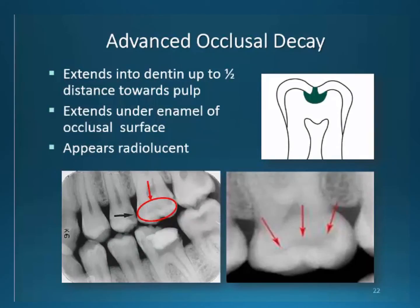Advanced occlusal decay will extend halfway into the dentin towards the pulp. The circle surrounding the lesion may be difficult to see, but you may be able to see the haloing darkened effect within the circle. Take a moment to make this change in your workbook so you can get a good image of this area of decay. The darkened area is advanced occlusal decay, followed by enamel junction involvement, and is much easier to see as decay progresses.